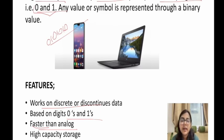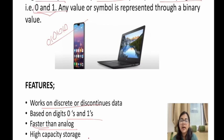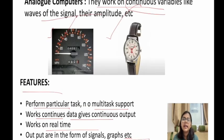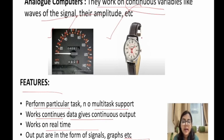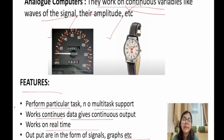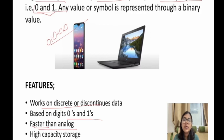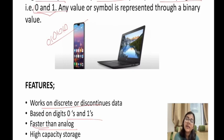Digital computers use microprocessors which contain space to store the data. Whereas analog computers have no facility to store data — they work only in real-time, which is the main drawback of analog computers. Digital computers have the facility to store data. We can work on a discontinuous basis and also on a non-real-time basis.